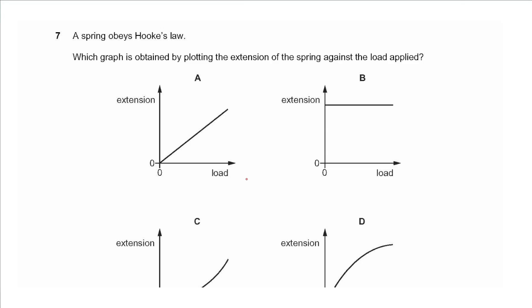Question 7 says a spring obeys Hooke's law. Which graph is obtained by plotting the extension of the spring against the load applied? Hooke's law states that extension and load are directly proportional, so that would be a straight line through the origin, so we choose A.